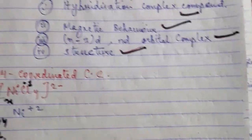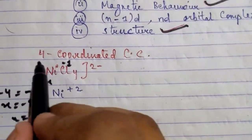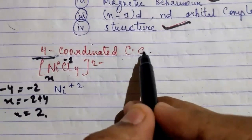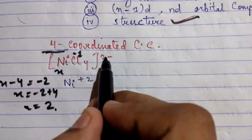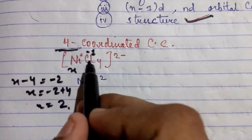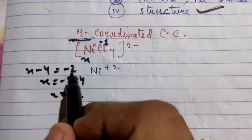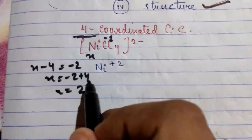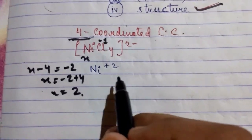First, I have taken 4-coordinated compounds. For example, NiCl₄²⁻. So for NiCl₄²⁻: x + (−1)×4 = −2, so x = −2 + 4, x = 2. The oxidation state of Ni is 2+.